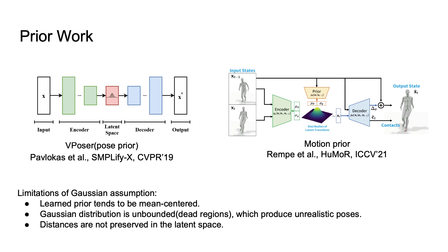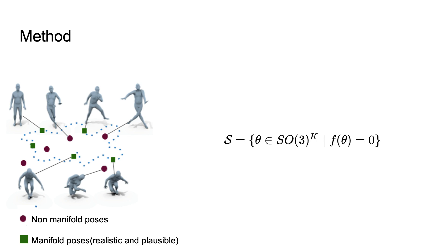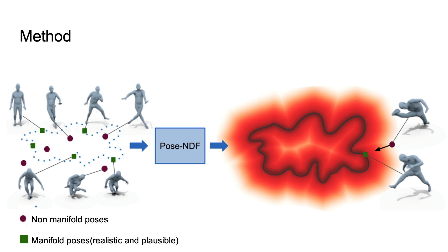To overcome this, we take motivation from 3D shape learning. Neural implicits have been very successful for modeling 3D shapes, which are 2D surfaces embedded in 3D space. We take motivation from the neural distance field representation of 3D shapes and extend it to the higher dimension of human poses. Specifically, we learn the pose manifold as a surface S, where plausible poses lie on the manifold with zero distance, and non-plausible poses lie outside with a non-zero distance. We propose to learn this manifold using a high-dimensional neural field, analogous to representing 3D shapes using neural distance fields.